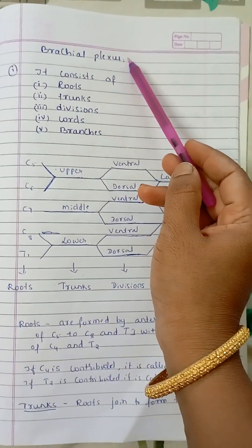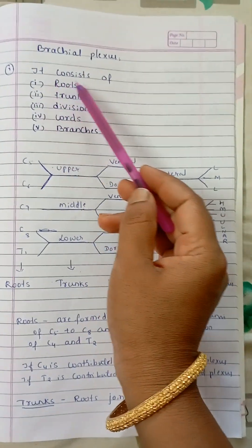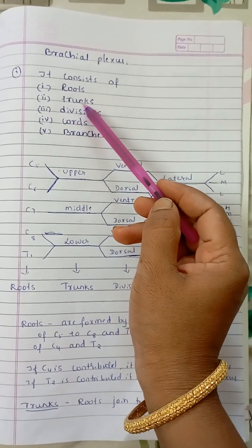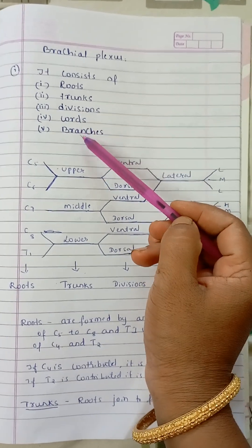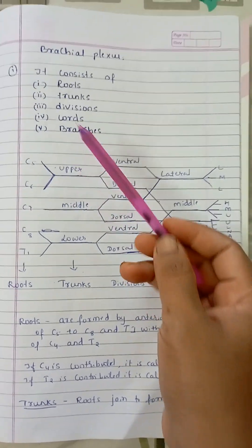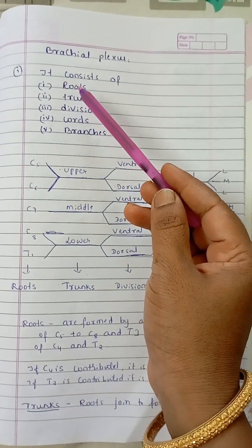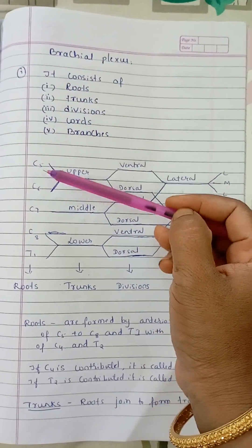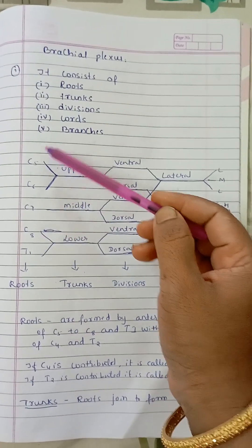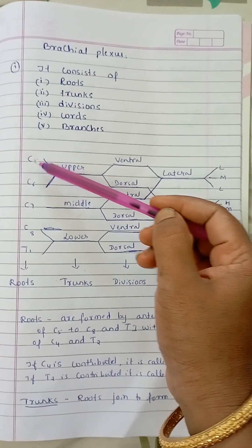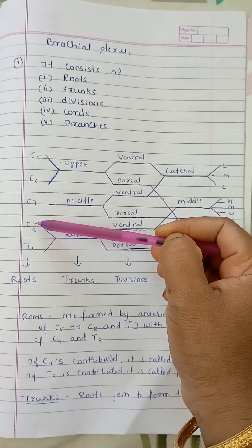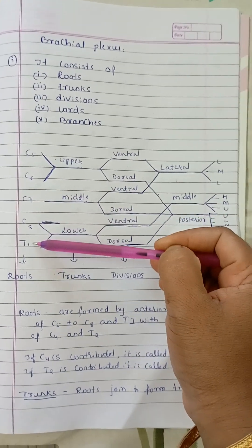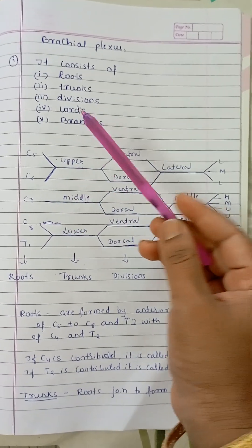Today I am explaining the brachial plexus. It consists of roots, trunks, divisions, cords, and branches. The roots are of five types, formed by C5, C6, C7, C8, and T1.